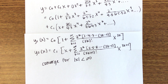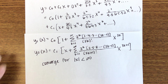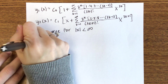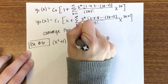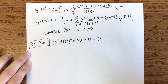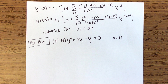We have one more example. Do you want to do it today or tomorrow? Okay, you're going to do it. Your equation is (x²+1)y'' + xy' - y = 0, finding a power series solution about x=0. Start by explaining how you know there are two power series solutions and where they converge, then actually find them. Work with the person next to you.